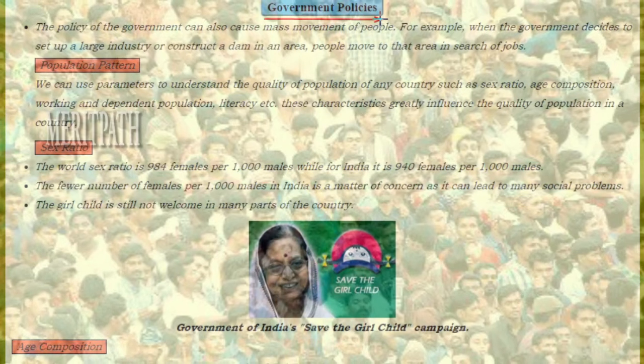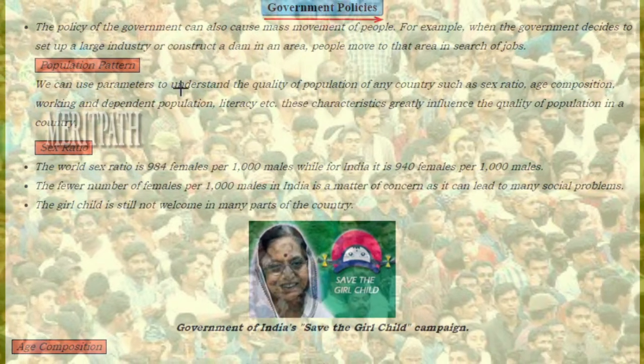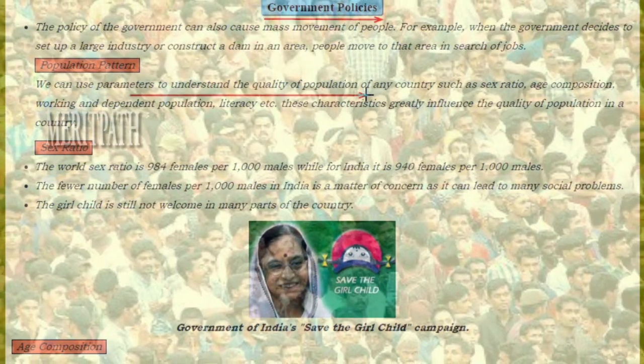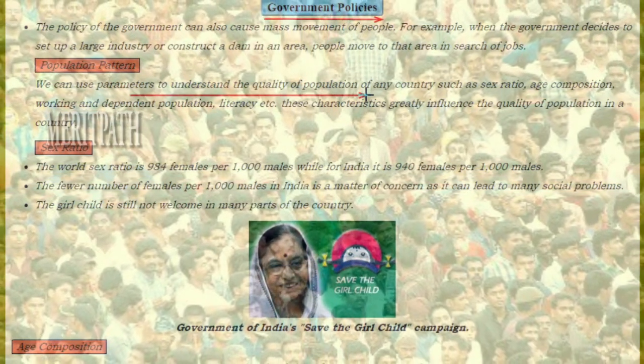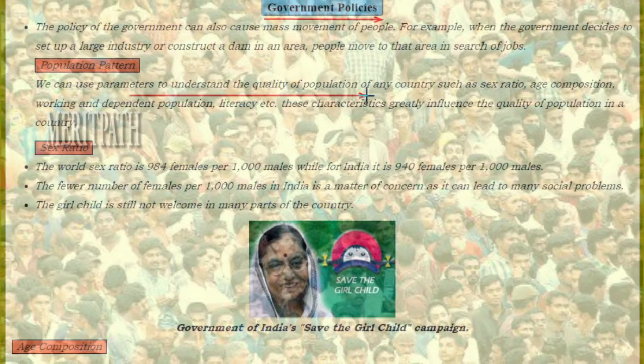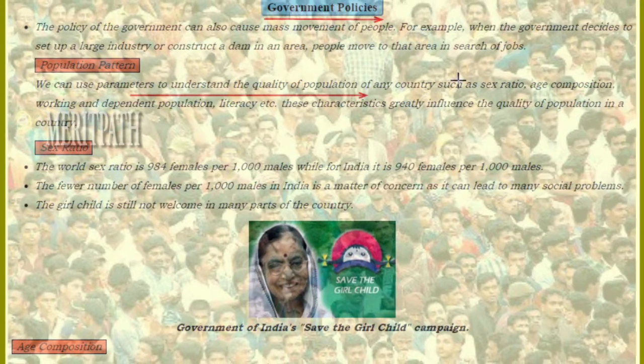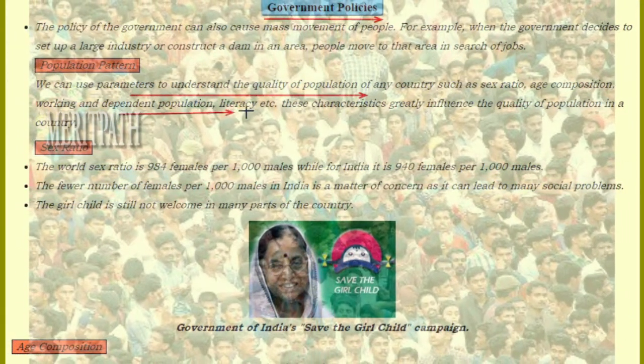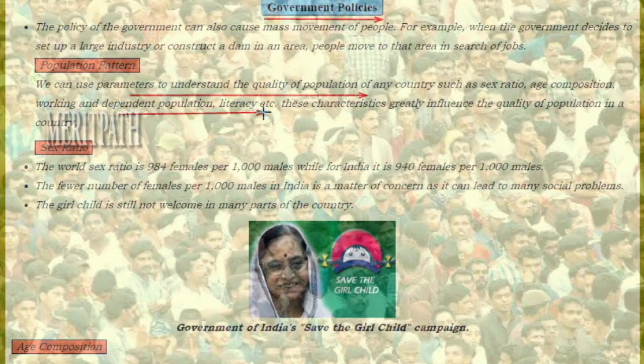Population pattern: You can use parameters to understand the quality of population of any country, such as sex ratio, age composition, working and dependent population, literacy rate, etc.